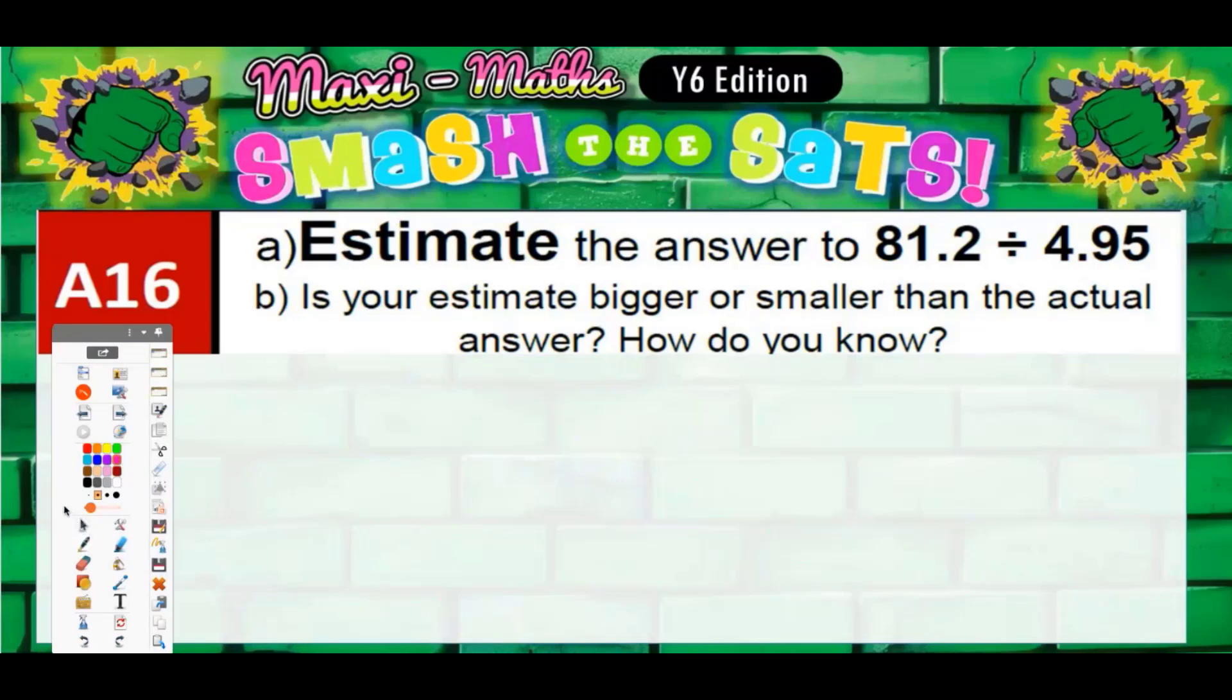Question 16: Estimate the answer to 81.2 divided by 4.95. Now anytime you see the word estimate, you do not work out the real answer. We don't really want the real answer. We have to round the numbers that were given to something that we can do in our head.